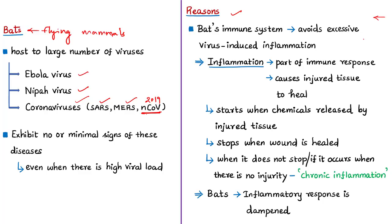Inflammation is part of the immune response — a normal physiological response that causes injured tissue to heal. The inflammatory process starts when chemicals are released by damaged tissue. In response, white blood cells make substances that cause cells to divide and grow to rebuild tissue and repair the injury. Once the wound is healed, the inflammatory process slowly ends.